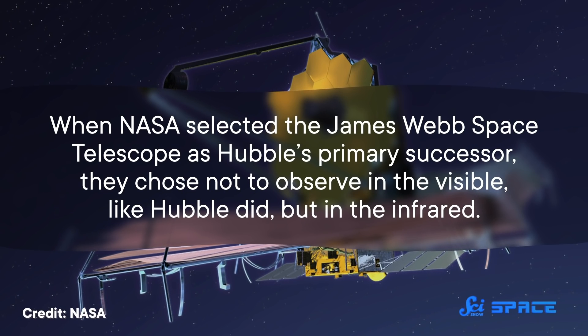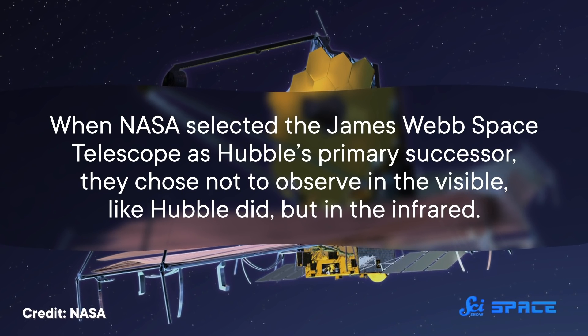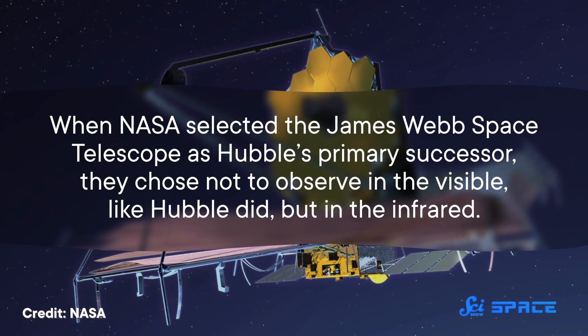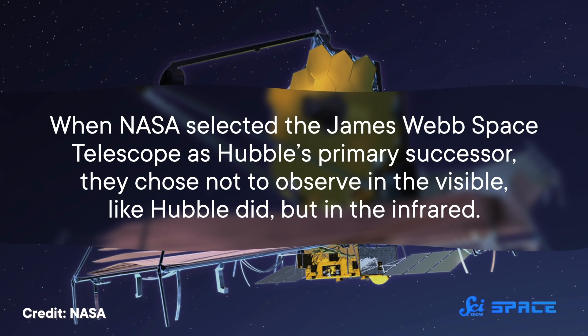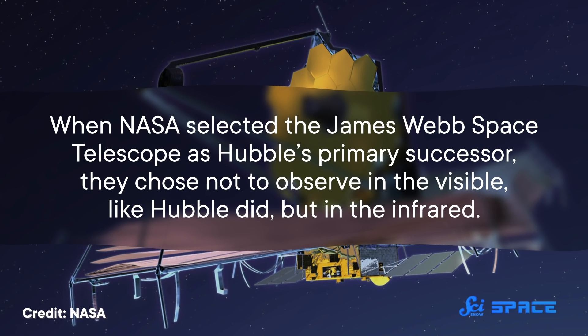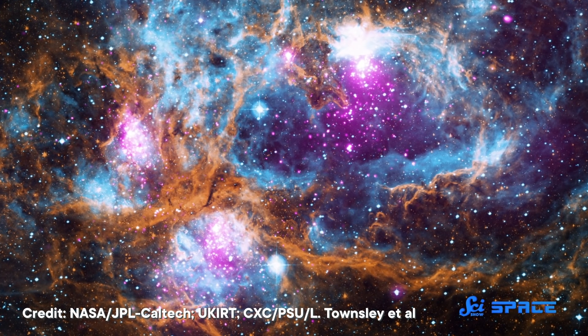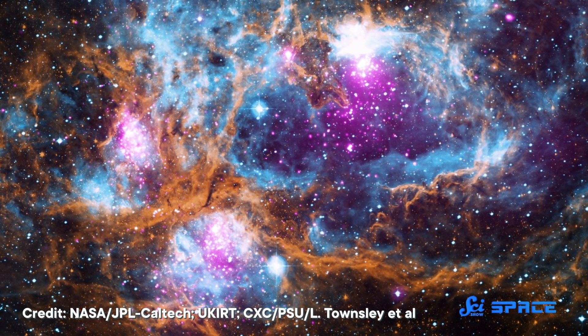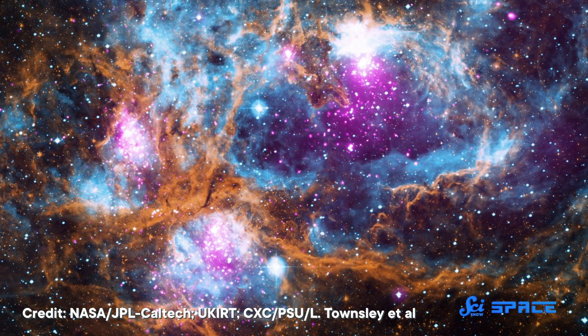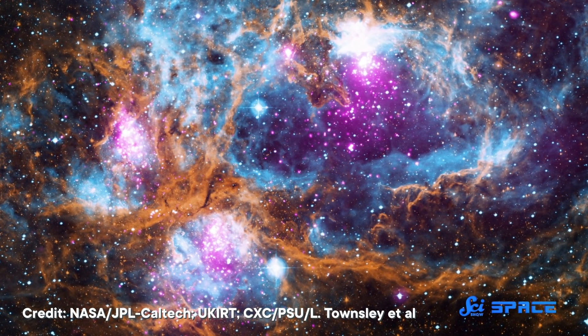When NASA selected the James Webb Space Telescope as Hubble's primary successor, they chose not to observe in the visible, like Hubble did, but in the infrared. By the time we're filming this, Webb hasn't launched yet. But the hope is that, like Hubble before it, Webb will reshape how astronomers see the cosmos, from the atmospheres of exoplanets to the emergence of the first galaxies.